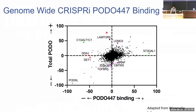Before the summer, our lab in collaboration with the Wisnowski lab performed a CRISPR-i screen where we knocked down genes rather than knocking them out as traditional CRISPR and Cas9 would. We then looked at the total podocalyxin on these knocked-down lines as well as the POTO447 expression. We chose genes that were not really affecting total POTO too much, but rather affecting the POTO447 binding — those would be genes along this axis here.